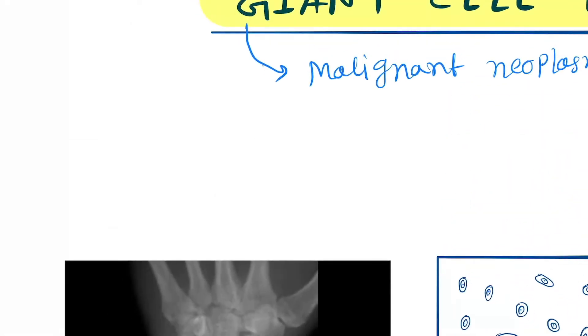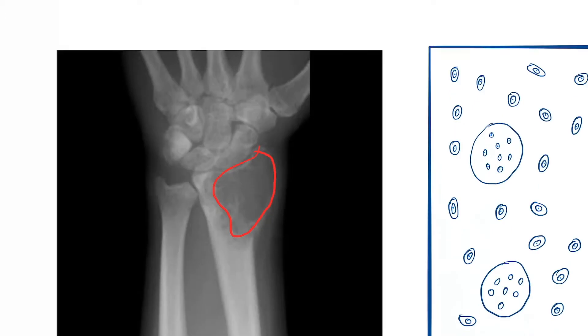The most affected area of the giant cell tumor is the epiphysis of the bone. You can see the epiphyseal center here, and this appears like a soap bubble appearance.